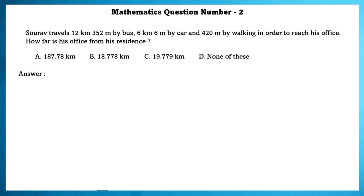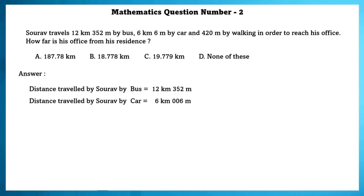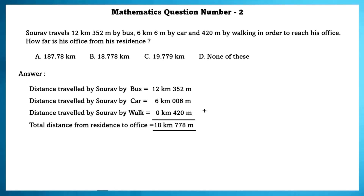Mathematics question number 2. Saurav travels 12 kilometers 352 meters by bus, 6 kilometers 6 meters by car, and 420 meters by walking in order to reach his office. How far is his office from his residence? Distance by bus = 12 km 352 m, distance by car = 6 km 6 m, distance by walk = 420 m. The total distance from residence to office is 18 kilometers 778 meters.